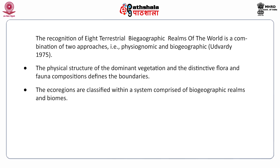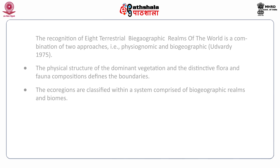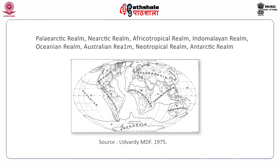This diagram shows different biogeographical regions of the world: the Palearctic realm, Nearctic realm, Afro-Tropical realm, Indo-Malayan realm, Oceanic realm, Australian realm, Neotropical realm, and Antarctic realm.